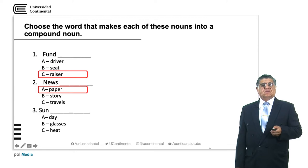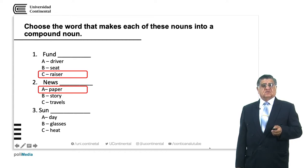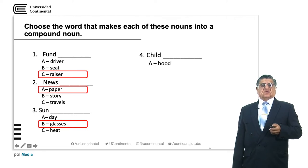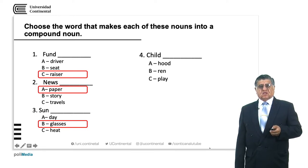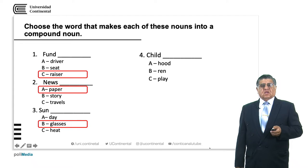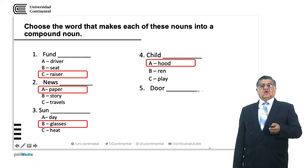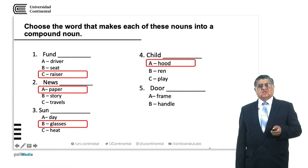Number three: Sunday, sunglasses, sunheat. Since we need a compound noun, Sunday is not the case. Sunglasses — those glasses we use when there is a lot of sun. Number four: childhood, child rent, child play. The answer is childhood — that means the years when a person is a child.